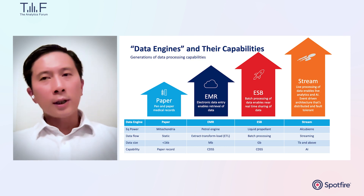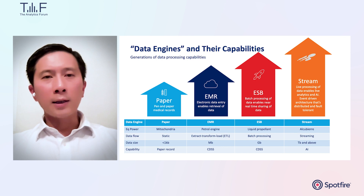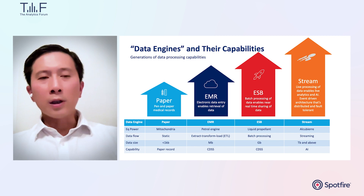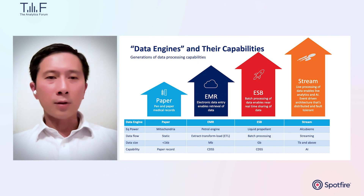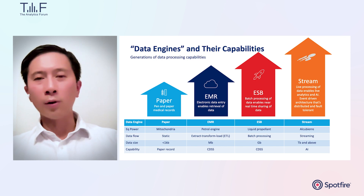To enable all these capabilities, we needed to build data engines that are able to stream data. If you compare the different kinds of data engines and capabilities, one can see that from left to right, we see different generations of ability to use data. Over 20 years ago, we used paper, and as you know, paper is very limited in many senses — it's static information. You could not record a lot of information because it would be too tedious to write everything down.